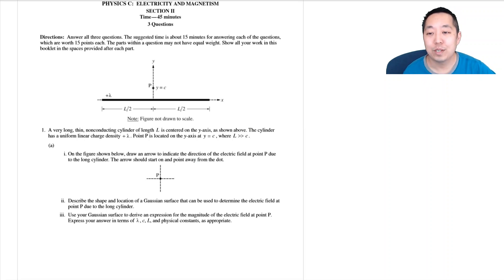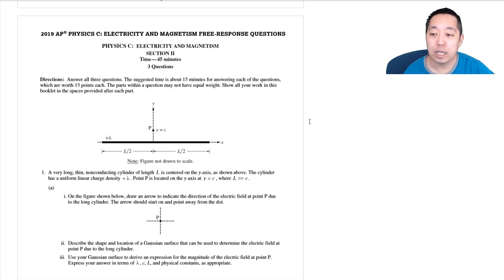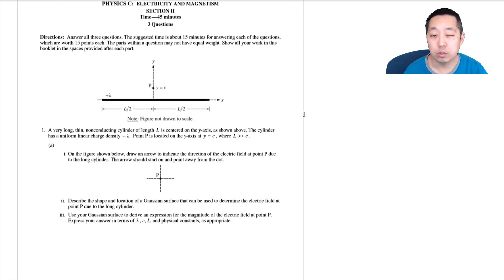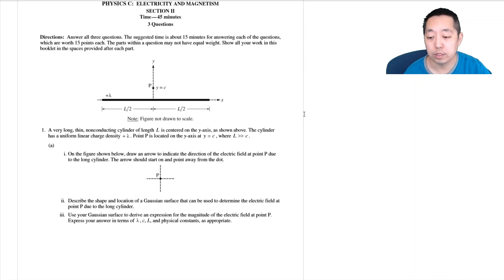Hi all, this is Alan with Bothell STEM Coach, and today we're looking at the 2019 AP Physics C Electricity and Magnetism free response questions. The College Board split it into set one and set two, so these are the set one questions. As usual, if there are any mistakes, I'll put corrections in the description below, along with links to all the PDFs for the solutions I put together.